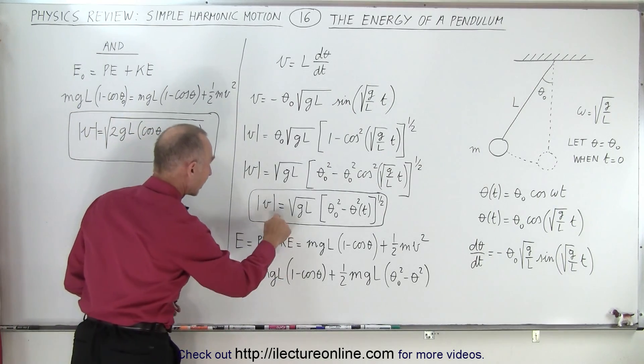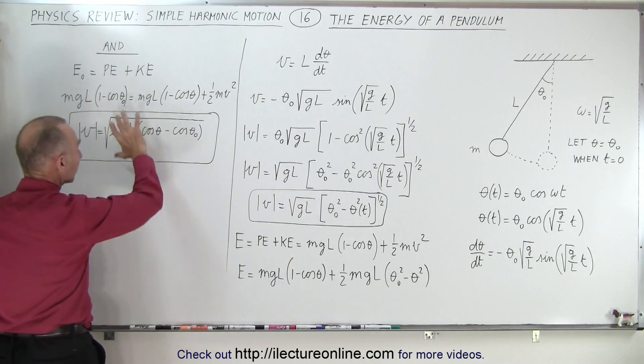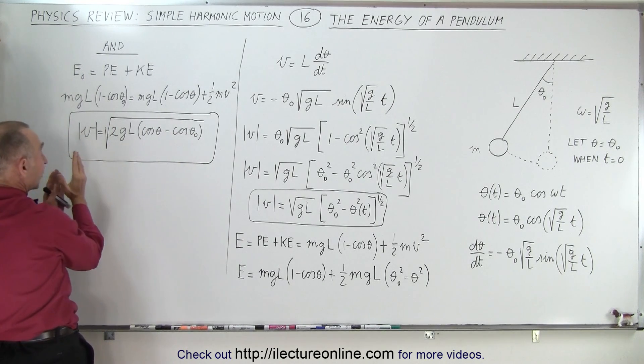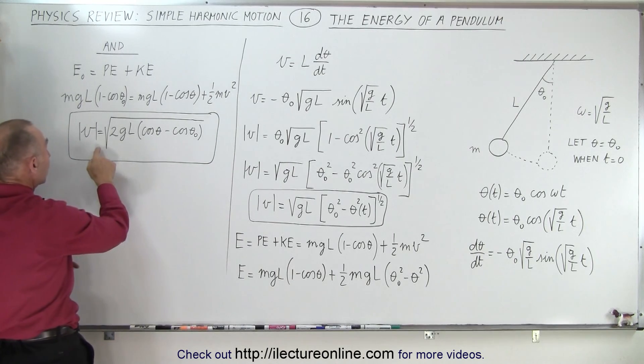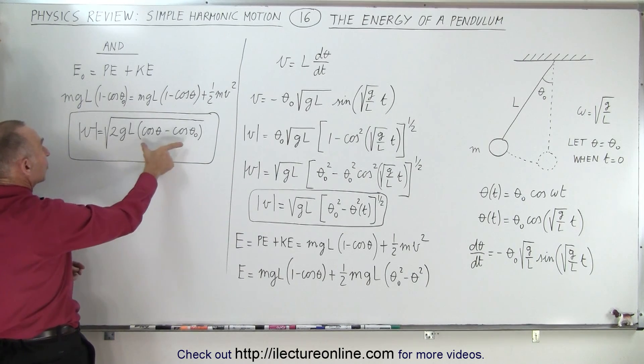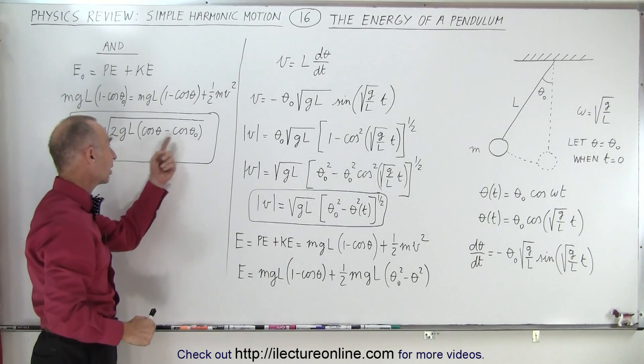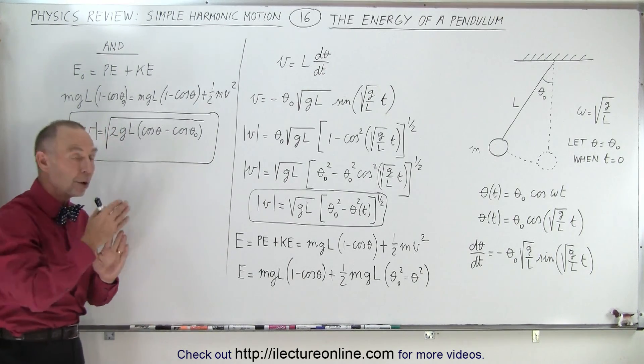And of course, since we have an expression for v right here, we can plug that in here with a little manipulation, and we can see that the velocity, the absolute value of the velocity, because you have both sides of the swing, is going to be equal to the square root of 2gl times the cosine of theta minus the cosine of theta sub naught, where that's the initial angle, and that's the angle at any point in the swing.